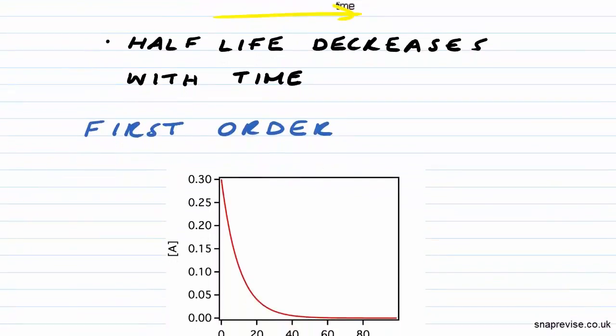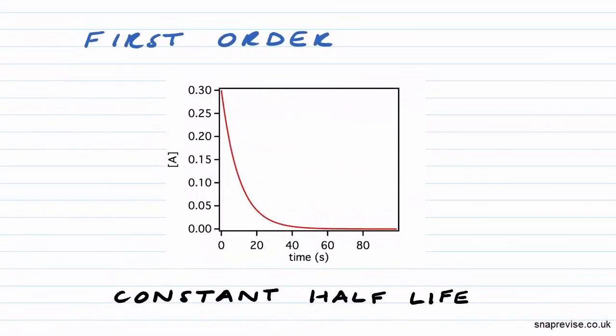However, if we look at a first-order reaction, the half-life is constant. So if we have a look at that now, the concentration starts at 0.3, so if we decrease it to 0.15...